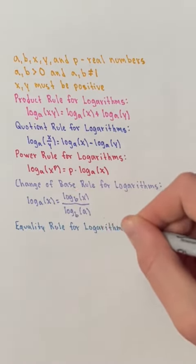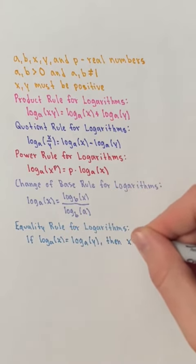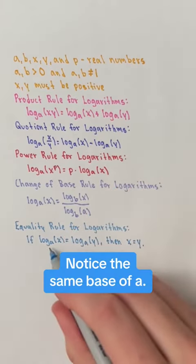The equality rule for logarithms states that if log base a of x equals log base a of y, then x equals y. Notice the same base of a.